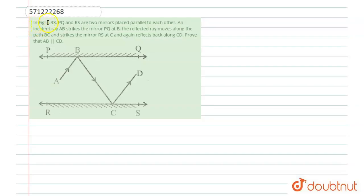The question says: in figure 6.33, BQ and RS are two mirrors placed parallel to each other. An incident ray AB strikes mirror BQ at B, and the reflected ray moves along path BC and strikes mirror RS at C, and again reflects back along CD. Prove that AB is parallel to CD. Now let's approach the solution.